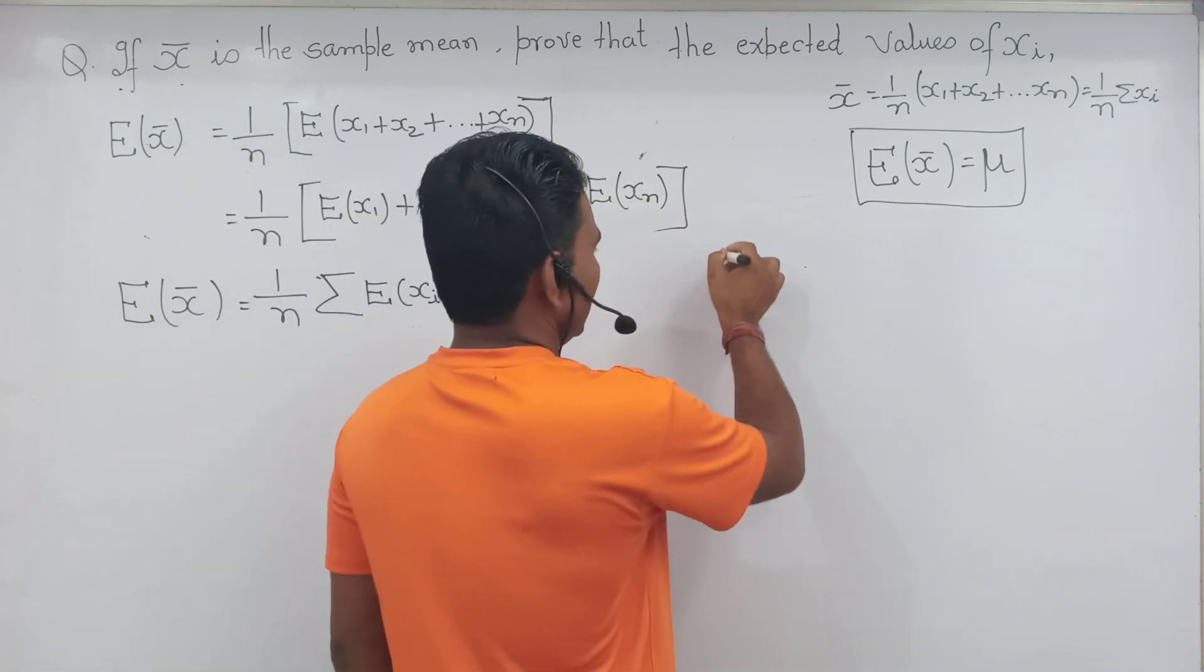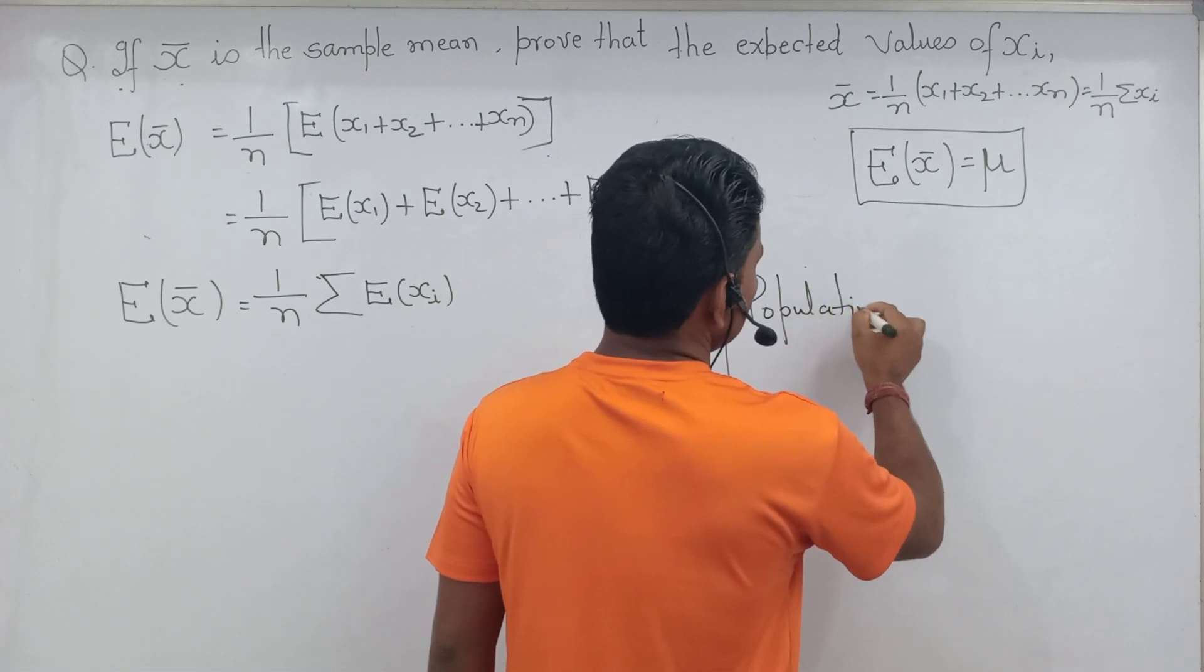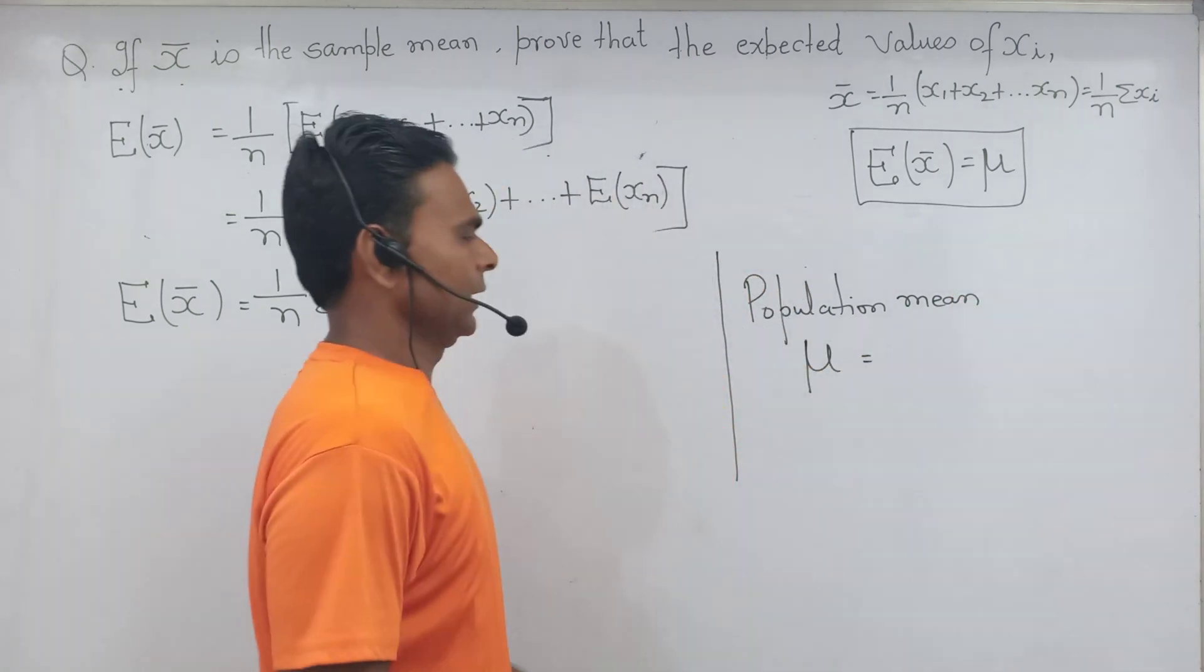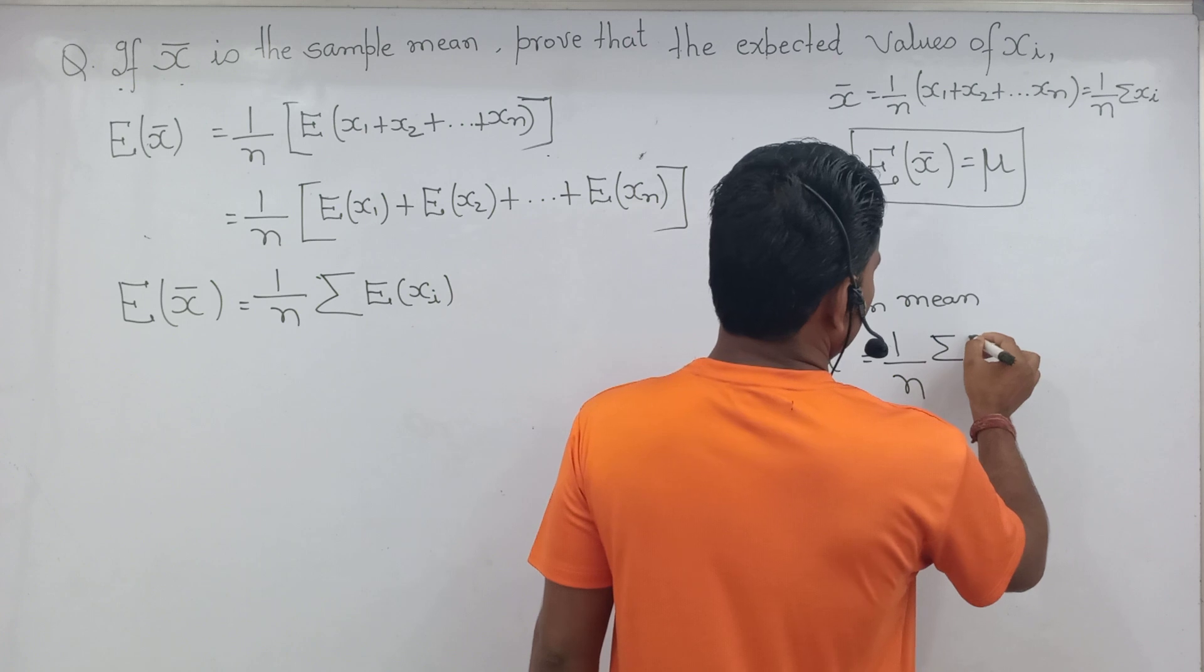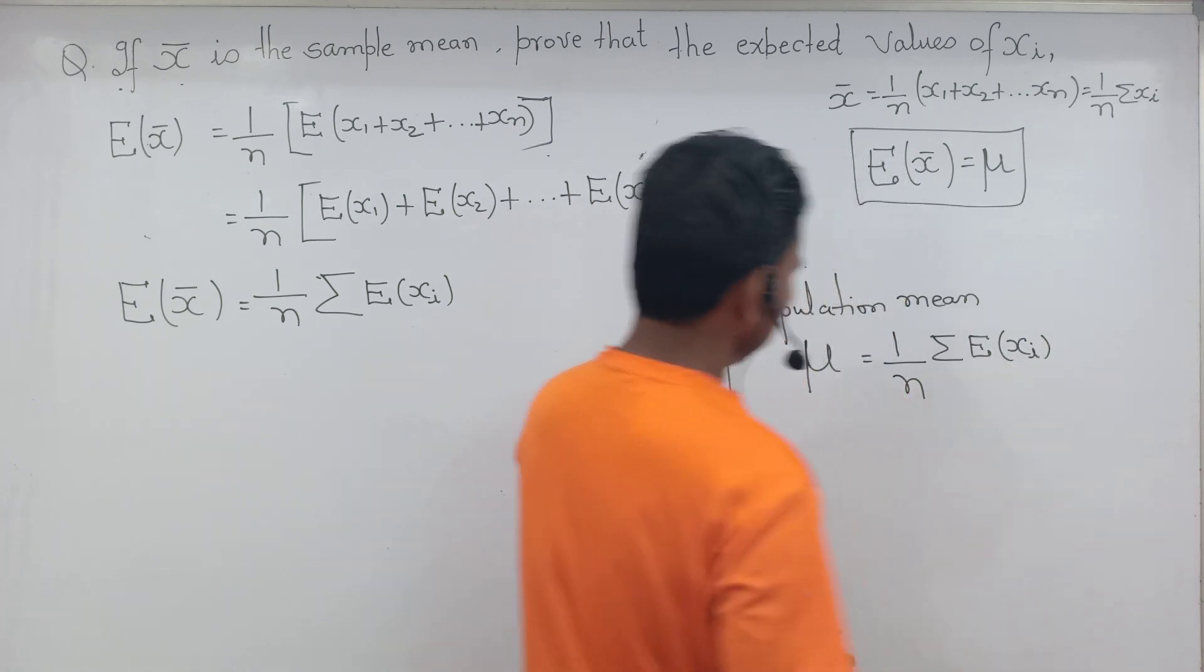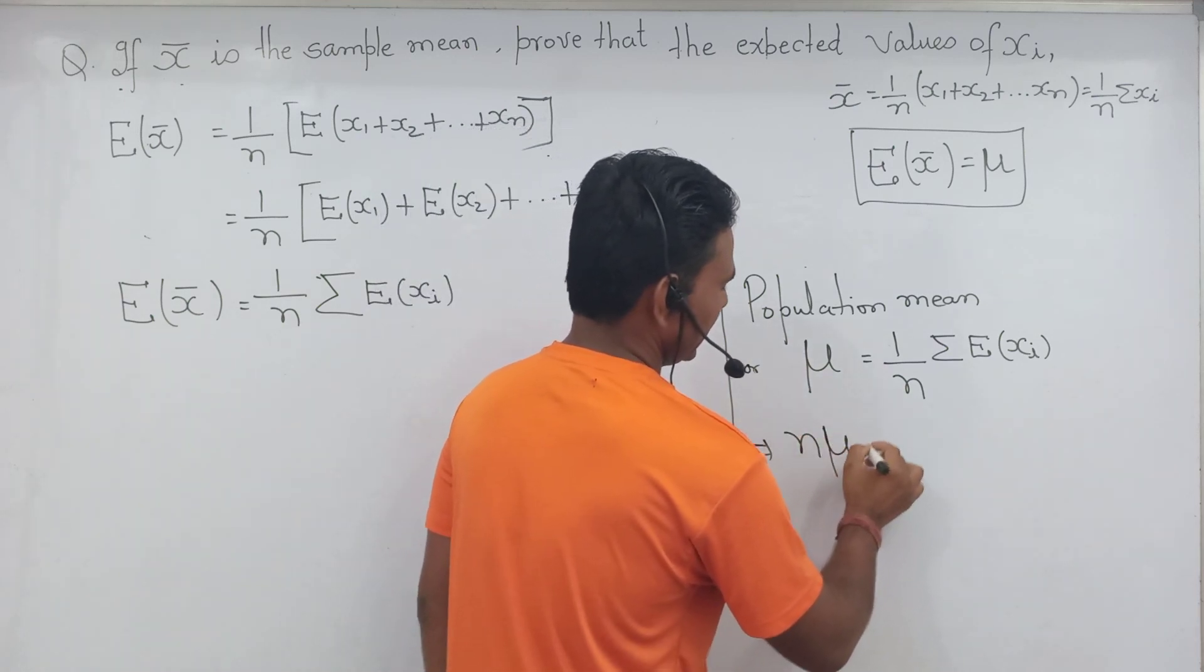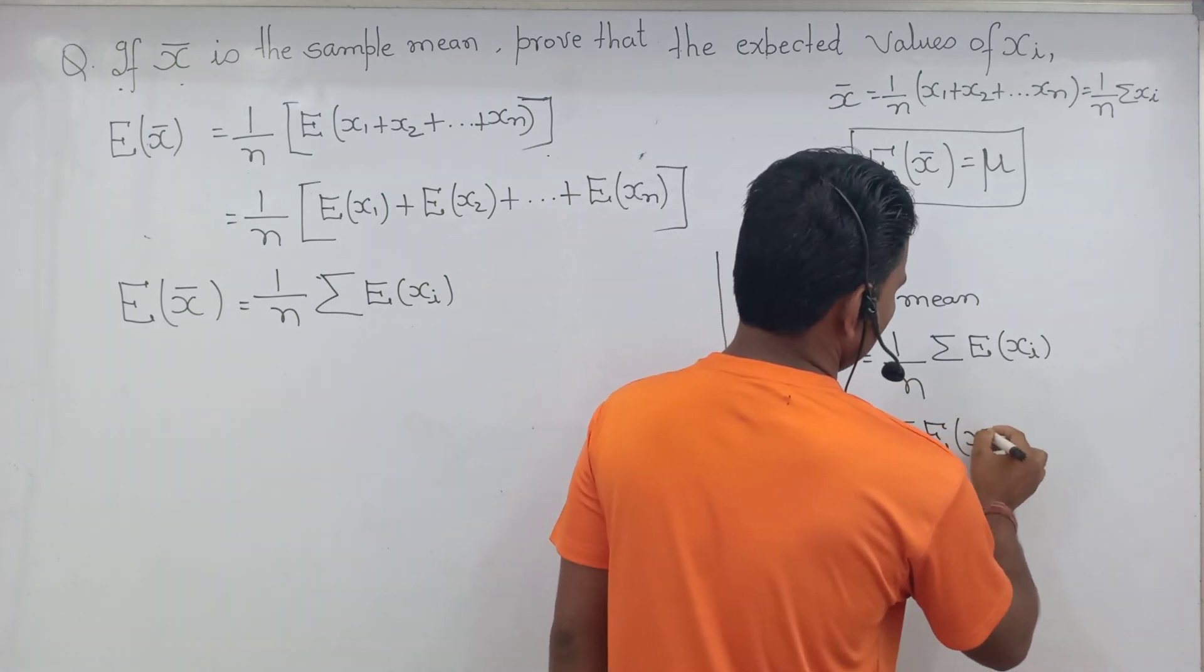To yahaan tak maine expected value of mean equal to nikala. Ab thoda sa yahaan par dhyan dena hai. Population mean, 1 by n summation of expected value of X_i.